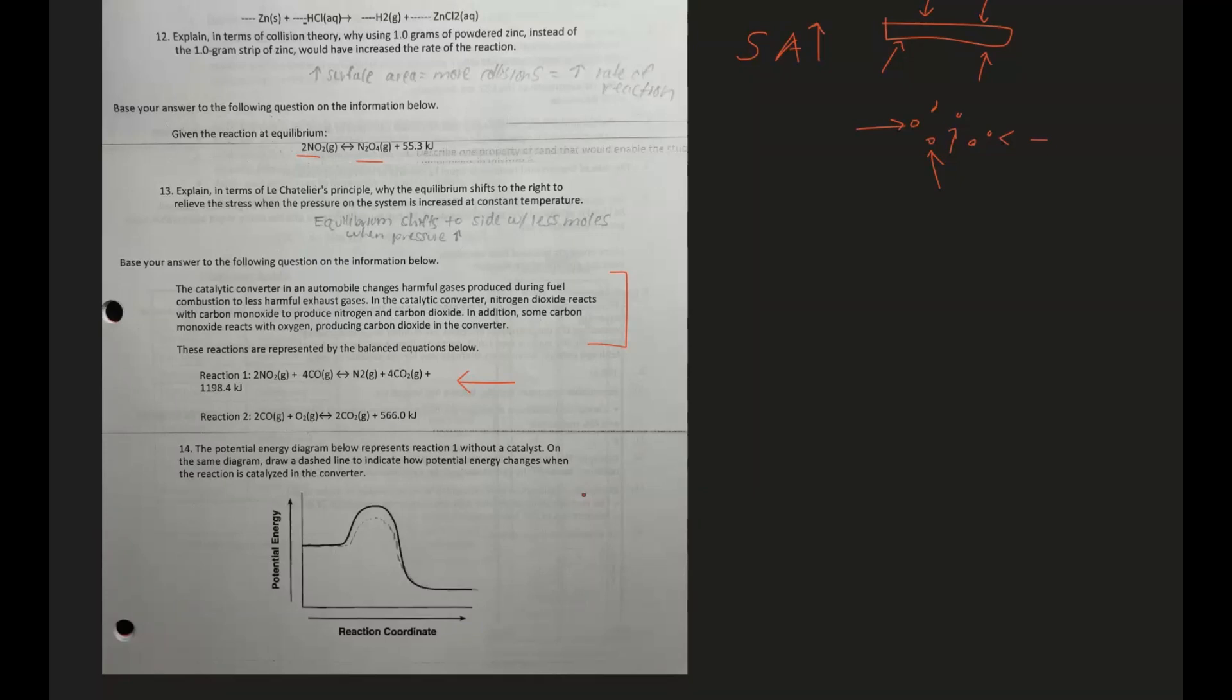So a catalyst speeds up the reaction, and so what happens is, like we talked about before, it decreases that activation energy. So the potential energy of the reactants is going to be the same thing, except when it comes to this activation energy, it's not going to reach as high.